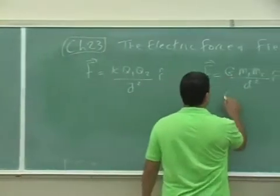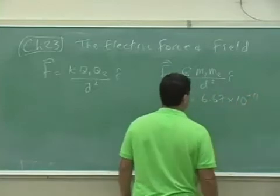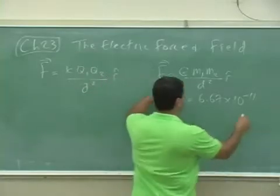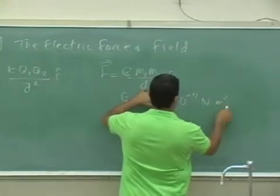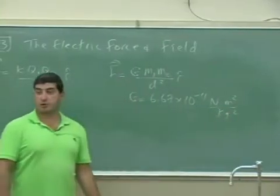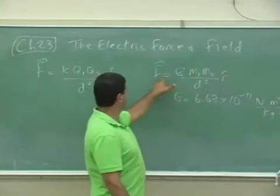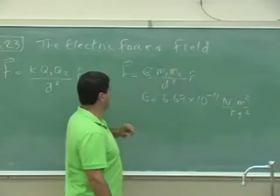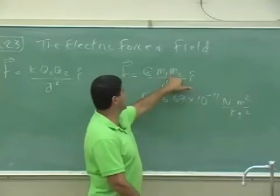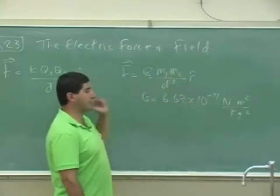The units of the G, G is equal to 6.67 times 10 to the minus 11, so it's a small number. And the units of it would be Newton times meters squared divided by kilograms squared. In order for the units to work out, that's what the units need to be. The Newton, because this whole thing needs to produce a Newton, and then times meters squared divided by kilograms squared, so that this kilogram squared would cancel with that kilogram squared divided by meters squared, and then the answer will come out Newton.